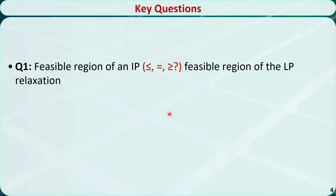Now let's answer four questions. Question 1: Which problem's feasible region is larger — an integer programming problem or its linear programming relaxation? The answer is that, in general, the linear programming relaxation has a larger feasible region, because the variables can take both integer numbers and fractional numbers in the linear programming relaxation.